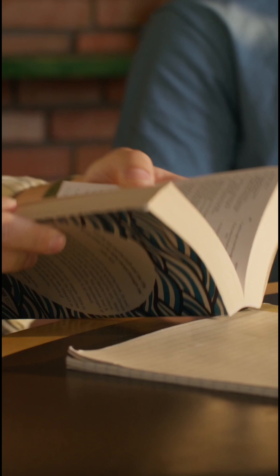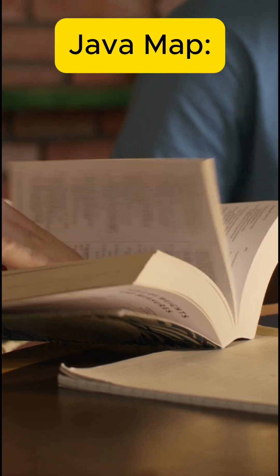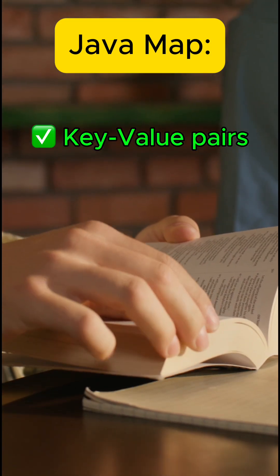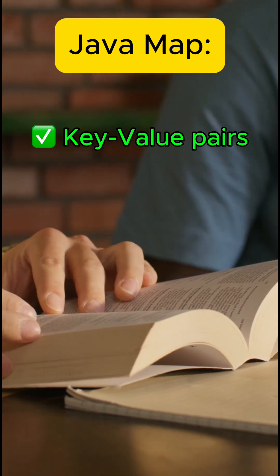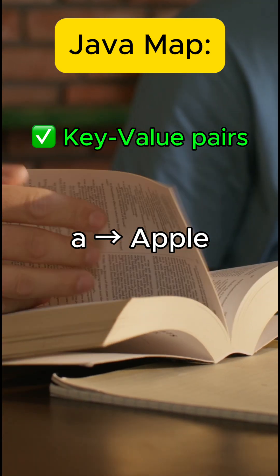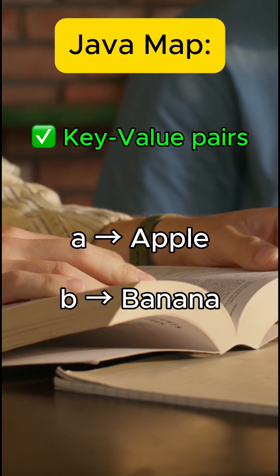Now, map. Use a map when you need to store data as key-value pairs, like a dictionary. For example, the key A maps to Apple, B maps to Banana.